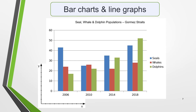Now we'll look at some questions you can ask to help you identify the features in these different types of graphics. We'll start with bar charts and line graphs. Question 1: what can you learn from the title? There won't always be a title, but where there is, read it carefully, as it will give you important information about the chart or graph and the first clue as to what it's about. In our sample question, for example, the title tells us that the graph shows seal, whale and dolphin populations in the Gormes Straits.